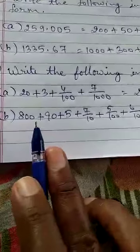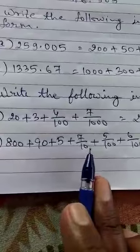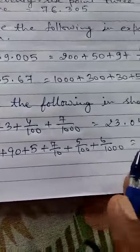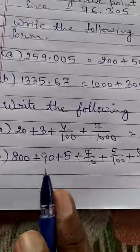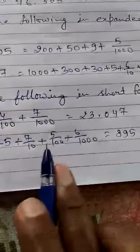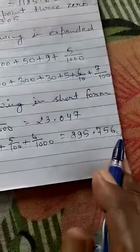Now question B: 800 plus 90 plus 5 plus 7/10 plus 5/100 plus 6/1000. How will you write? 800 plus 90 plus 5 equals 895. After that you will put the decimal point, then you will write 7, 5, and 6.